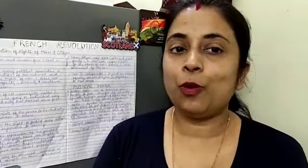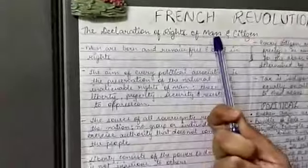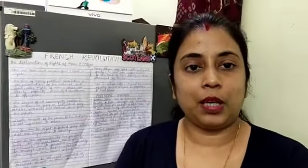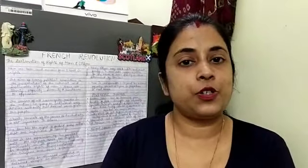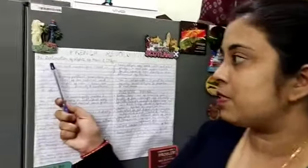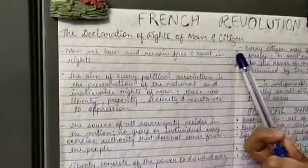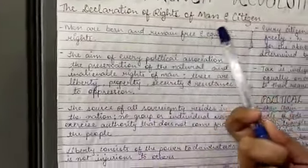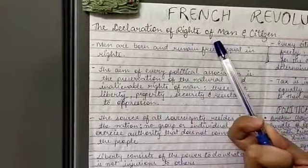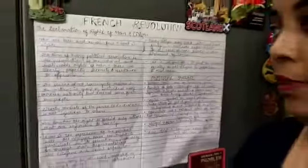Hello students, hope you all are doing well. Today's topic is the Declaration of Rights of Man and Citizen. In my last class we learnt about how France becomes a constitutional monarchy, and I mentioned this Declaration of Rights of Men and Citizens. So I am going to tell you what exactly the rights of man and citizens were during that period.